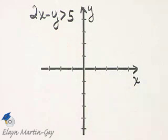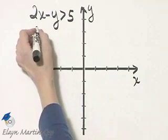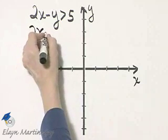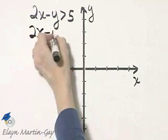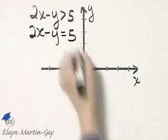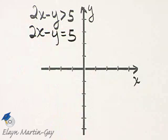Think of how we graph this linear inequality in two variables. We begin by looking at the corresponding equation. In this case, 2x minus y is equal to 5, and that's how we find the boundary line.